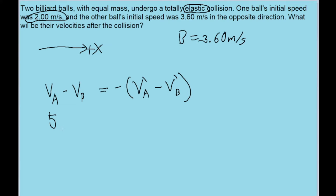So V_A, the speed of A, minus the velocity of B, is equal to 5.60 meters per second. And that's equal to negative V_A prime plus V_B prime.